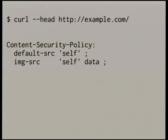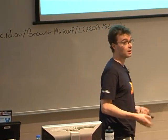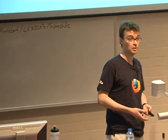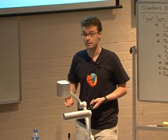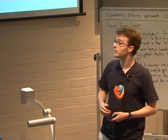The second directive is img-src. This overrides the first one, so the default value was 'self', but for images it's 'self' and 'data'. The 'data' value is for the data URI — the way to inline images directly into CSS or HTML through base64-encoded content. That's just there to show that you can override the default and have more precise directives for different types of content.